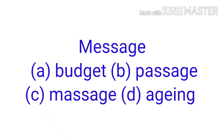Let's pronounce the options again: A — budget, B — passage, C — massage, D — aging. Three options — B, C, and D — have A-G-E in them. But because we are only considering the last syllable, we strike off option D and option A because the A-G-E is not in their last syllable. Now pronounce B: 'passage', and C: 'massage'. Despite having the same spelling in the last syllable, they have different pronunciations. The option whose last syllable sounds like the last syllable of the given word is option B — 'passage'. The A-G-E in 'message' sounds like the A-G-E in 'passage'.